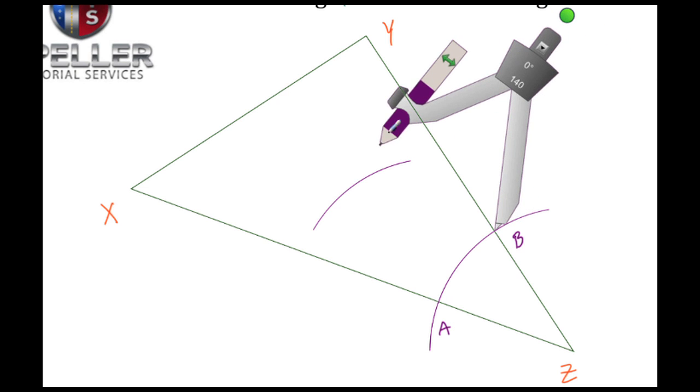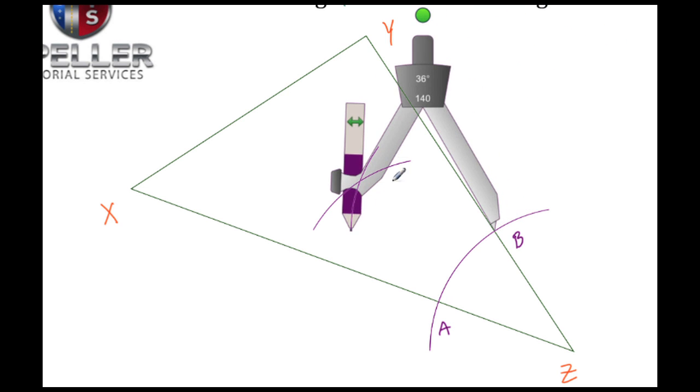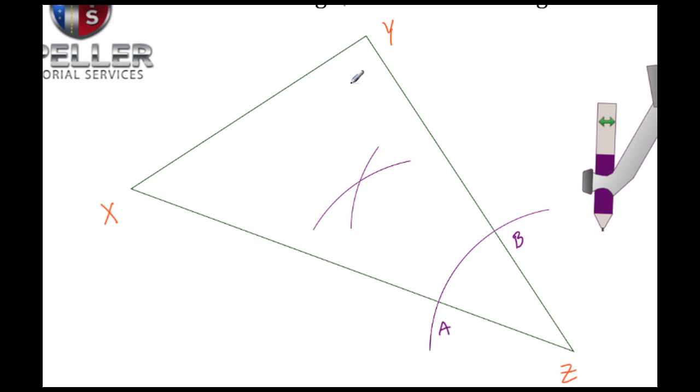I want these two arcs here to intersect. All right, and I've got my intersection here, and I'm going to call that intersection C.